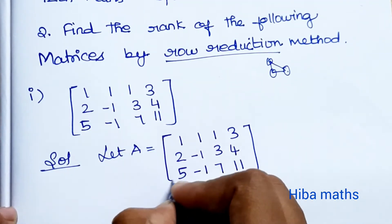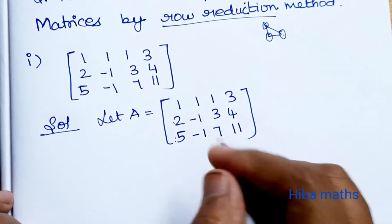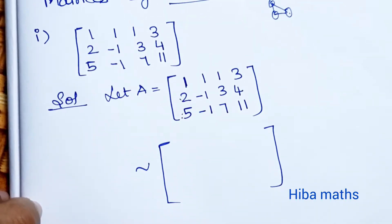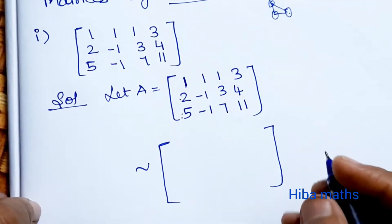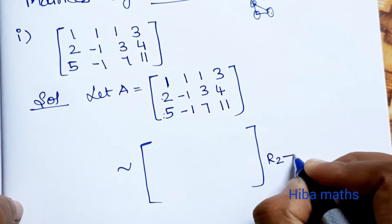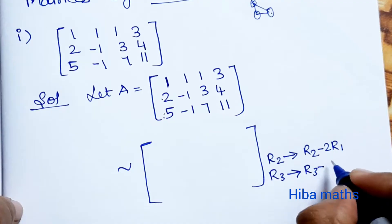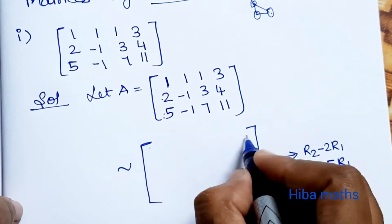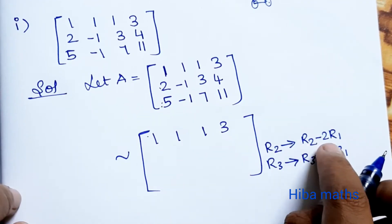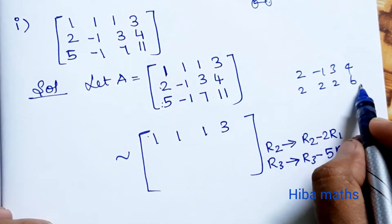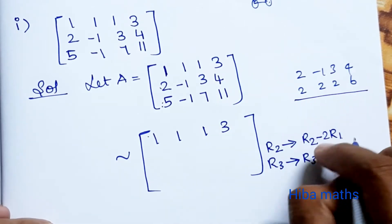In this matrix we have to make the first column elements below the pivot zero. There is already a 1 in the first position. In the first column we have 2 and 5 which we need to make zero. So R2 minus 2 times R1, and R3 minus 5 times R1. R1 into 2: 2, 2, 2, 6. So R2 minus 2 times of R1.